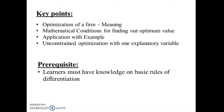This video covers the meaning of optimization in economics, the conditions of optimization, and one example on how to solve optimization problems. This video includes only unconstrained optimization with one explanatory variable. The problems of constrained optimization are not covered. For better understanding, learners require knowledge of basic rules of differentiation and basic microeconomics.